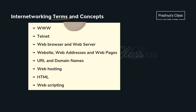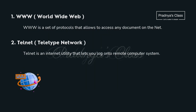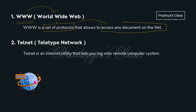Now let's discuss some terms and concepts related to internetworking. The first is WWW — World Wide Web — which is a set of protocols we follow to access any document on the internet. The second is Telnet — Teletype Network — which lets you log in to a remote computer system.